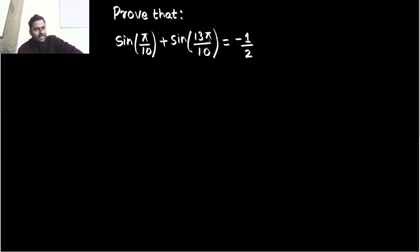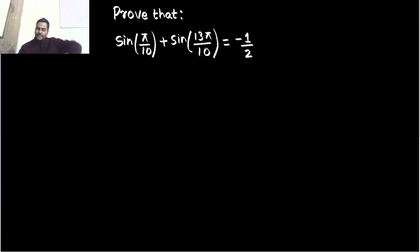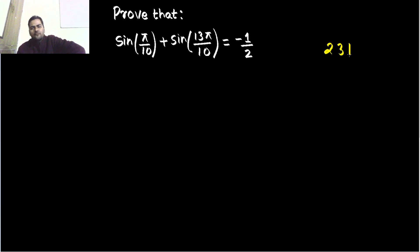So π/10 you know is 18 degrees. So 18 multiplied by 13: 18 into 10 is 180, 18 into 3 is 54, so it will be 234 degrees — equivalent to 234 degrees.